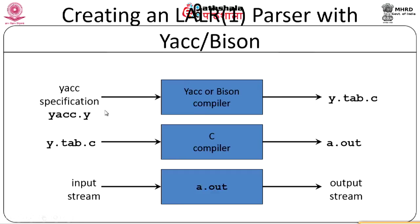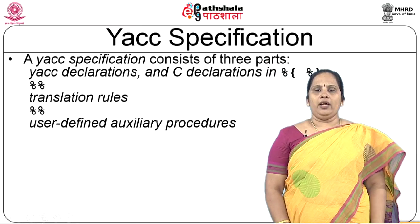The YACC or Bison compiler takes the .y input file and converts it to y.tab.c — comparable to how the Lex compiler converts a .l file to lex.yy.c. This y.tab.c is a C program fed to a C compiler, which generates an executable. Once you run a.out, you can execute your YACC file and check whether tokens are correct or incorrect.